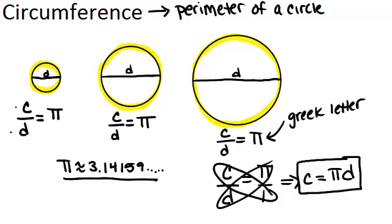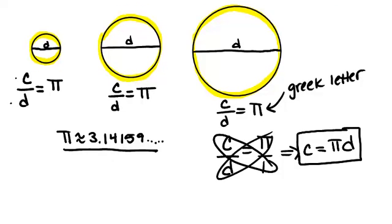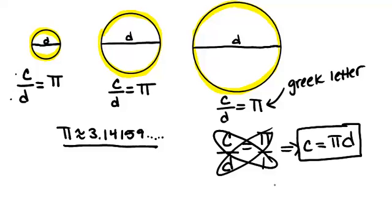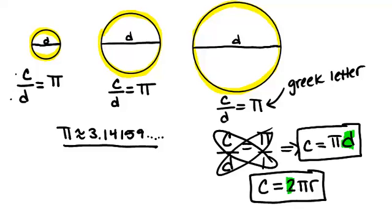Now there's one other way that people will often show the formula for circumference, which is that circumference equals 2 pi r. So where does that come from? Well, the difference between these two formulas is that in one we have d for diameter, and in the other one we have 2 r, where r is radius.